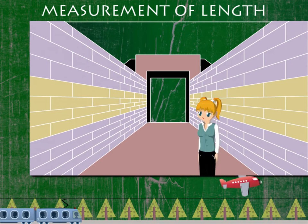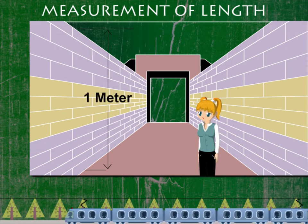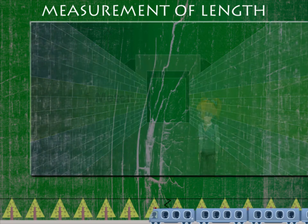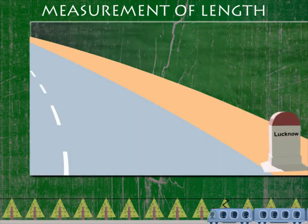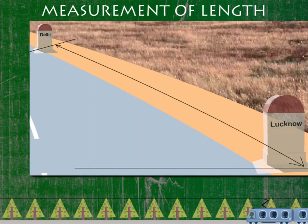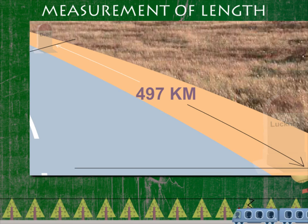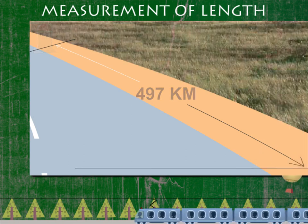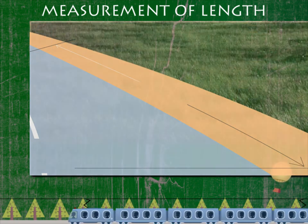As Nancy ma'am walks through the corridor, the wall is 1 meter high. The road between Delhi and Lucknow is 497 kilometers long.